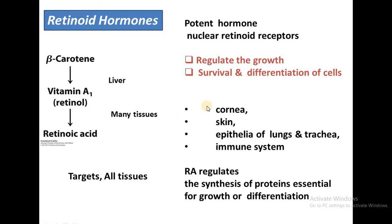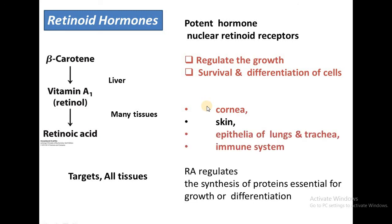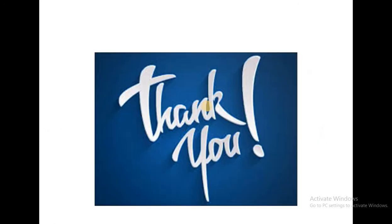In adults, the targets of retinoids include the cornea, skin, epithelia of the lungs and trachea, and the immune system. Retinoids also regulate the synthesis of proteins that are essential for growth and differentiation. I hope you get the idea — thank you so much for watching, Allah Hafiz.